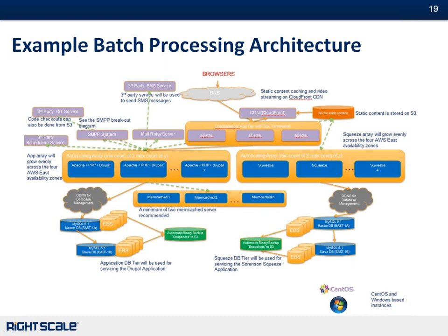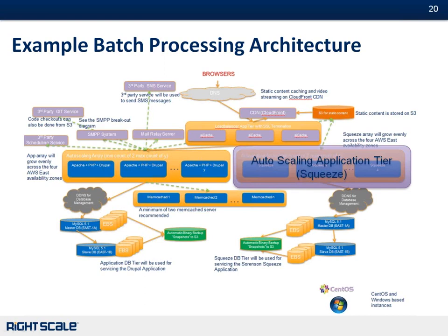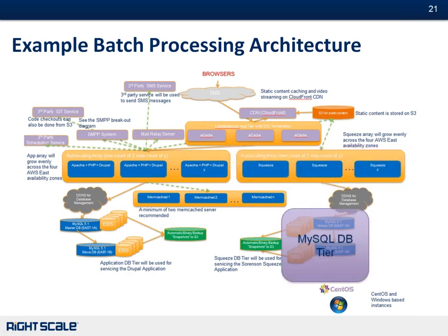Here's an example architecture for a customer — a social application with an encoding component that allows people to upload their videos, encode them, and have them served from the site in a different format. The highlighted part is an auto-scaling array of Sorensen Squeeze encoding servers that do all the crunching. They can scale based on load, and the database servers track the queue to keep track of all running jobs. These are the primary parts of this architecture that handle batch processing.